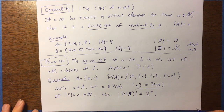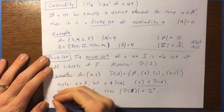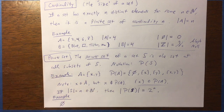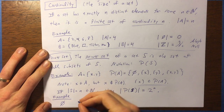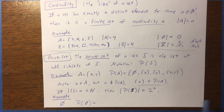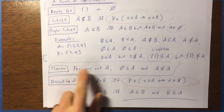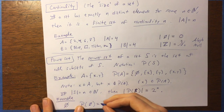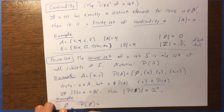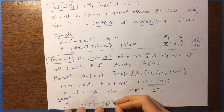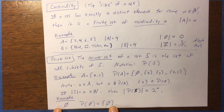Let's do one more example: start with the empty set, which has nothing in it. What is the power set of the empty set? Every set has the empty set and itself as subsets, so the empty set has exactly one subset, which is just itself. Therefore, the power set of the empty set is a set containing the empty set. That's different from the empty set itself — these are different things.